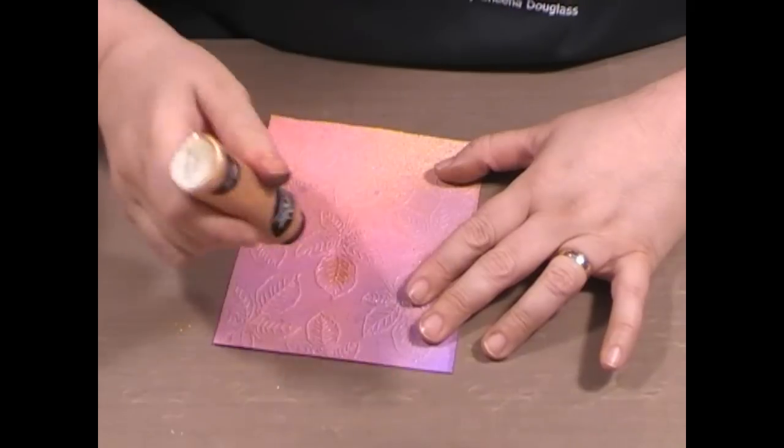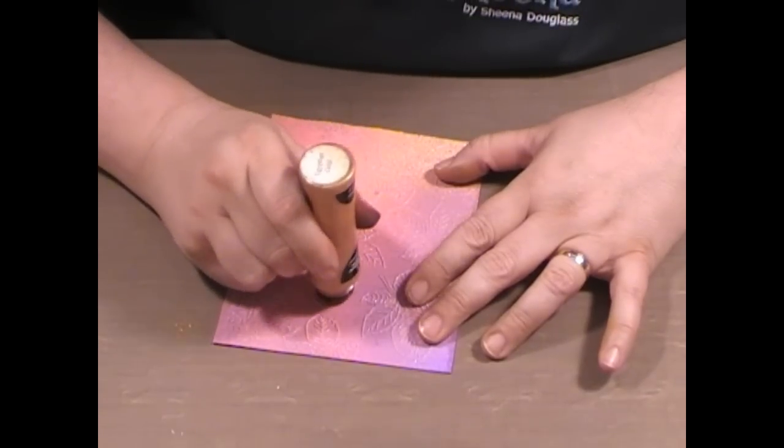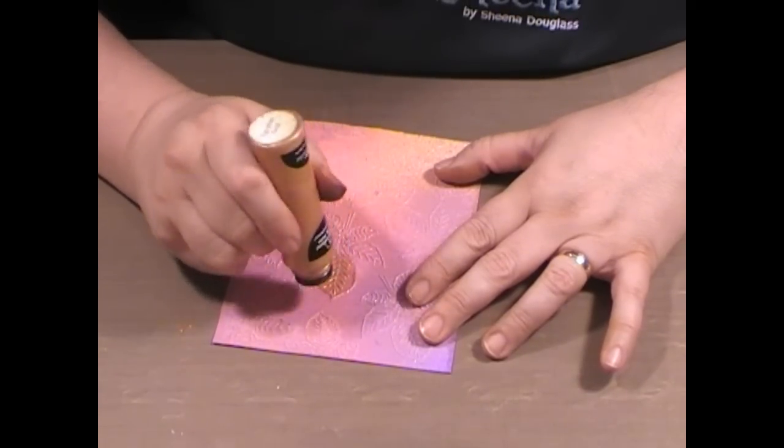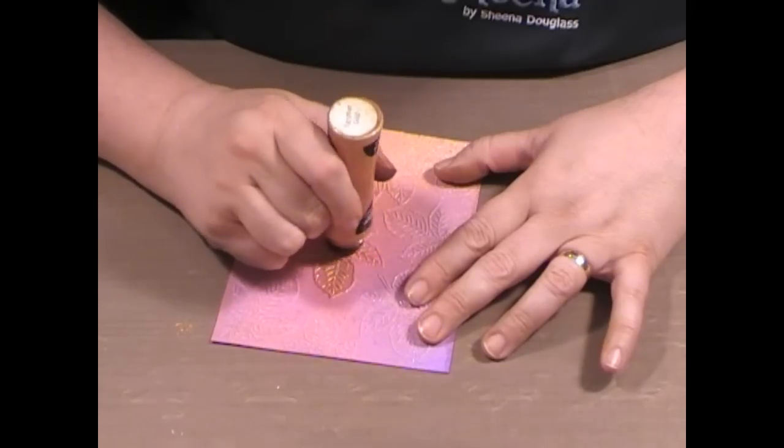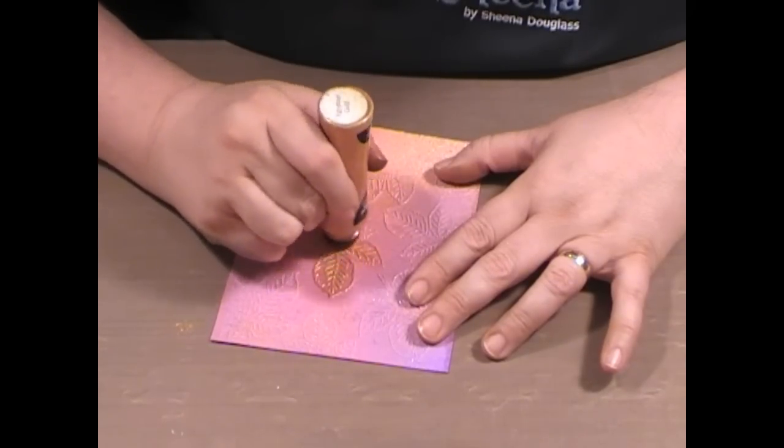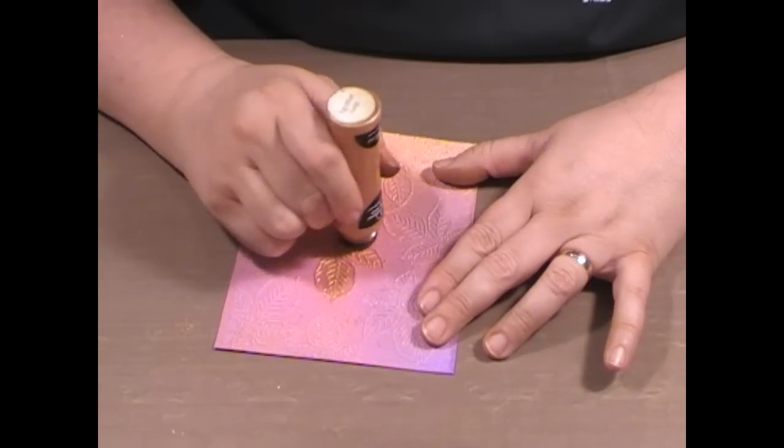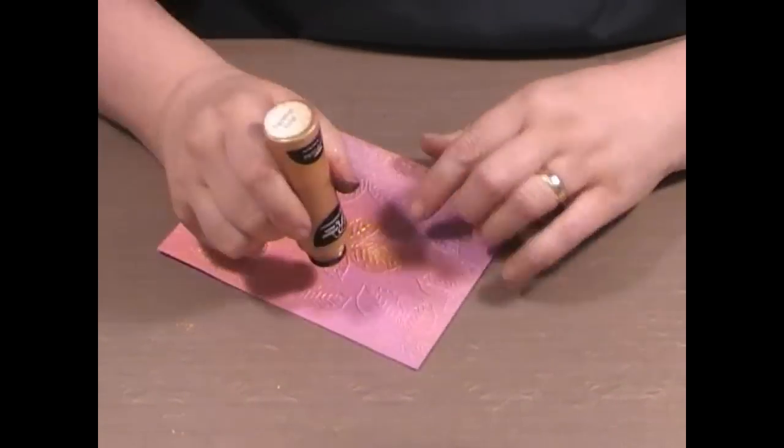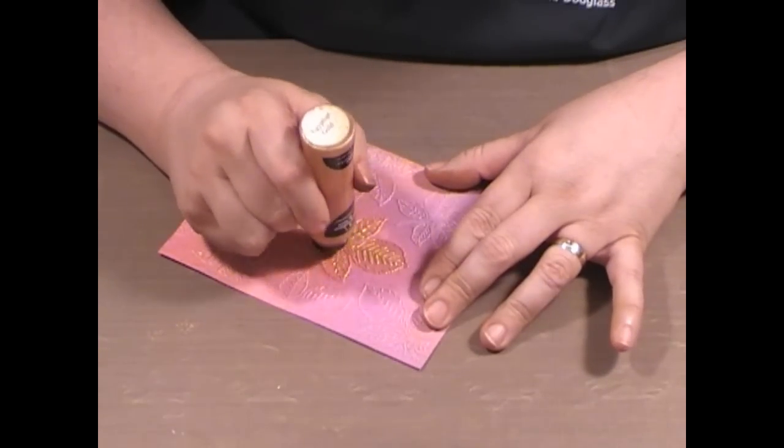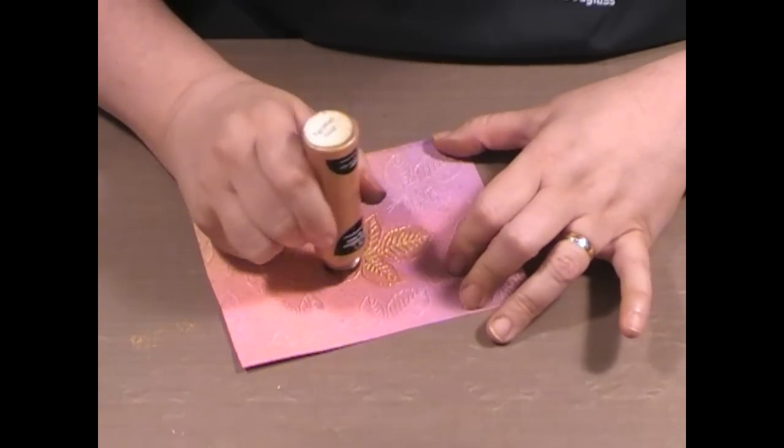You're going to press it down to get the pump action working and then just go ahead and bling over your leaf area. If you just keep rubbing over the top it should actually highlight the raised area as well.